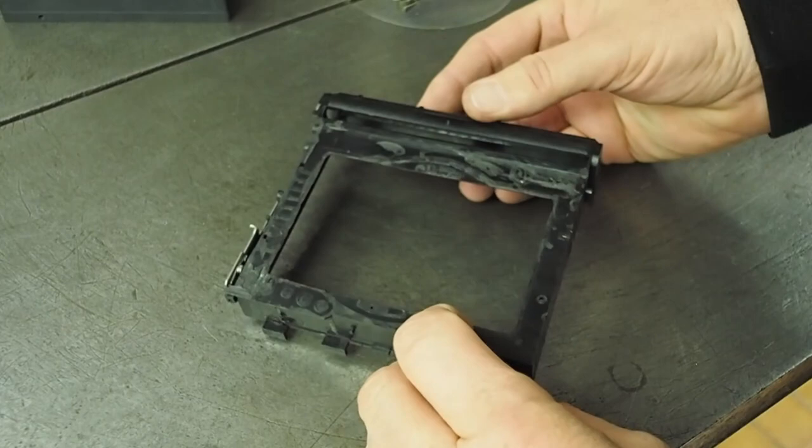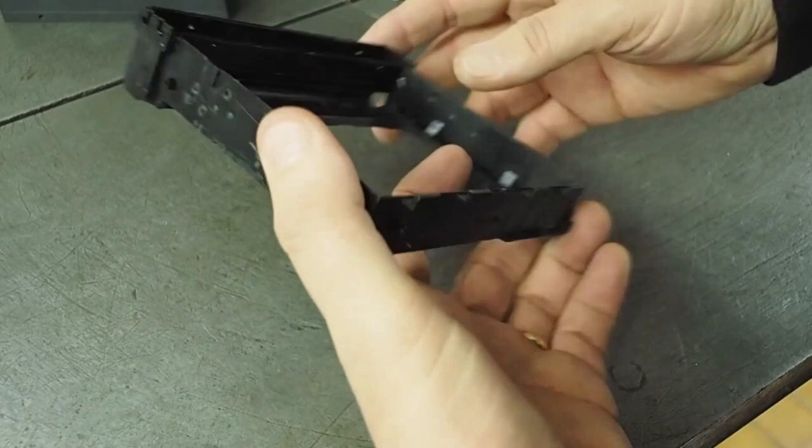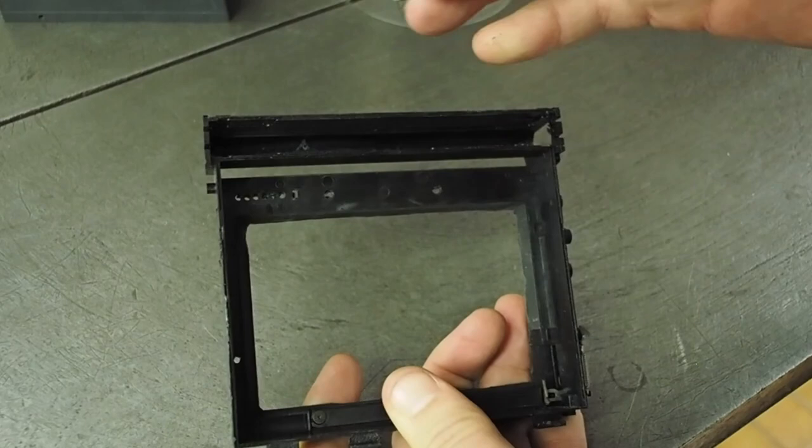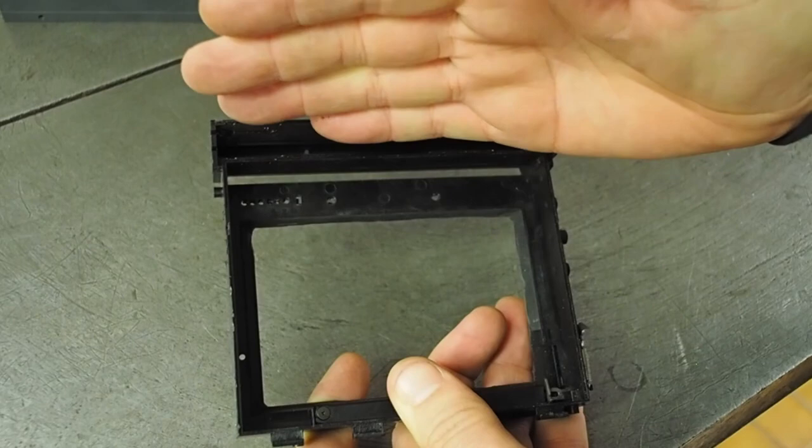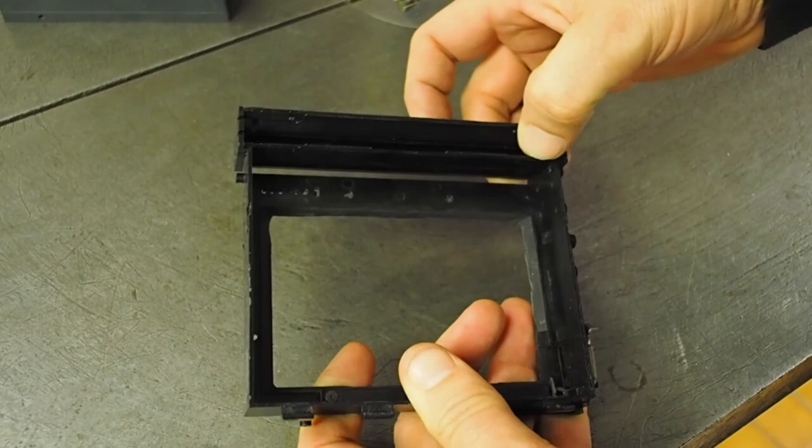If you look at some other videos of people pulling apart and hacking Instax wide cameras, this is the internal plastic component. It carries the two steel rollers, which squeeze the film as it comes out, breaking open the pod of chemicals and distributing them across the photo. So this is one of the major features of the camera.